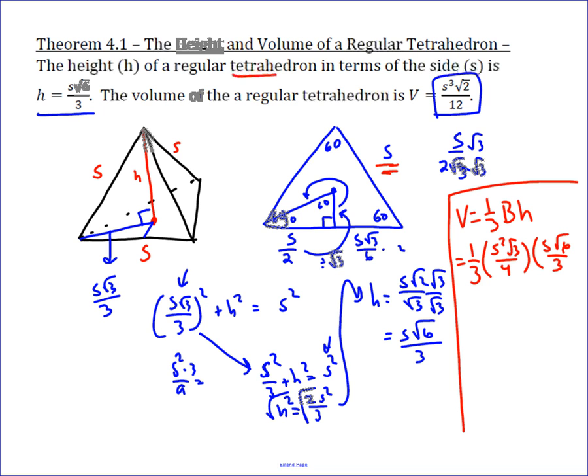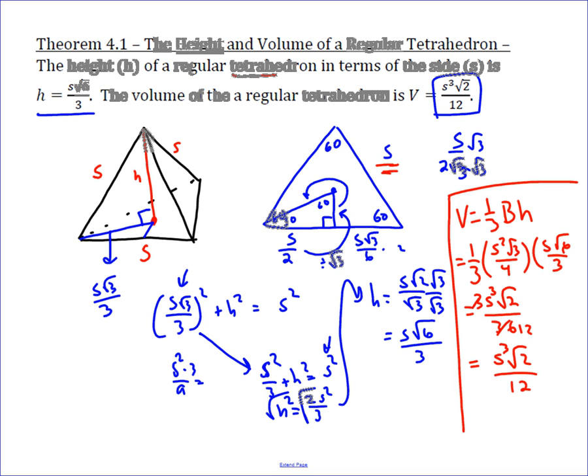Multiplying everything out, we get side cubed – it's root 18, which is going to be 3 root 2, so side cubed root 2 over 36, but the 3 and 36 cancel to 12, and you get the volume of a regular tetrahedron as just side length cubed root 2 all over 12,